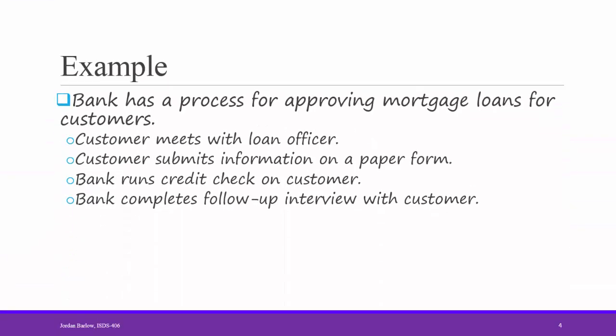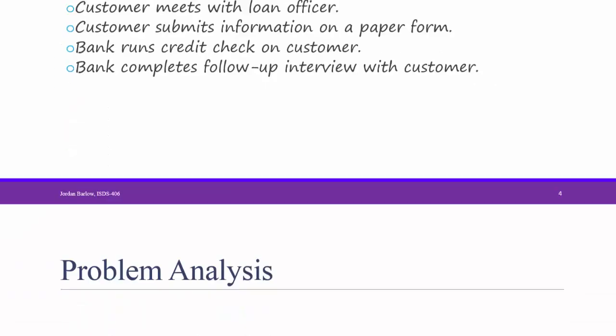During the course of this video, I am going to refer to the following example. Consider that a bank has a process for approving mortgage loans for customers. First, the customer meets with a loan officer. Then, the customer submits information on a paper form. Then, the bank runs a credit check on the customer. And finally, the bank completes a follow-up interview with the customer. This is the current situation, or the as-is system. I will now discuss several analysis strategies that the analyst could take in analyzing both the current situation and determining what the requirements for a good new system might be.